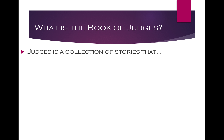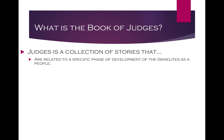The Book of Judges is a collection of stories related to a specific phase of development of the Israelites as a people. It's an in-between phase: the era of Moses and his divinely appointed successor Joshua has clearly passed, and the people don't really know what is to come next. So it's a place of waiting, a place of confusion, of things not working the way you think they should — a very specific phase of development.